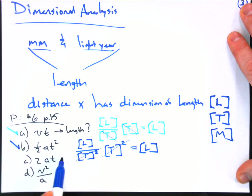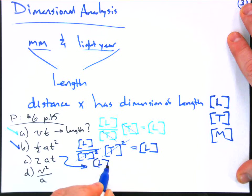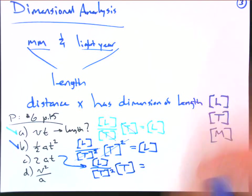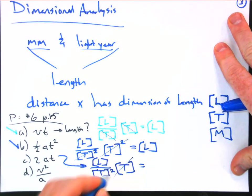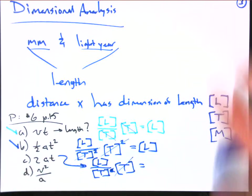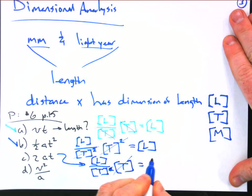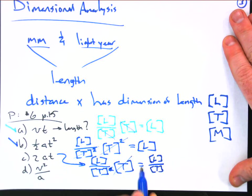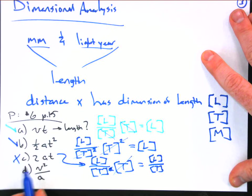What about C? Two times acceleration times time. Well, the two, there's no dimension. The acceleration, length divided by time squared. And I'm multiplying by time. So what happens here? This time cancels just the squared part right there. So we are left with length divided by time. So no, that one does not match.